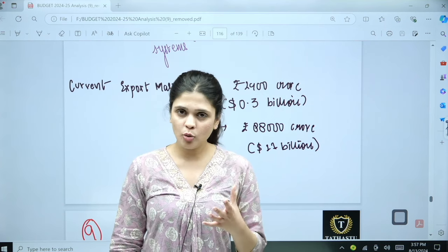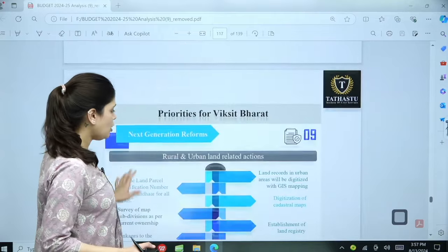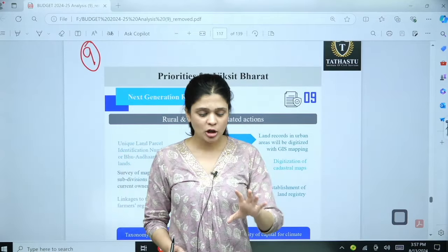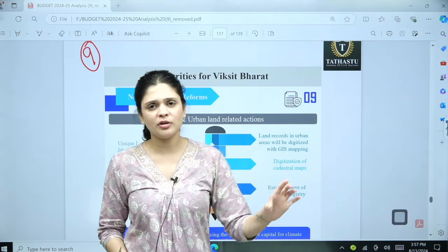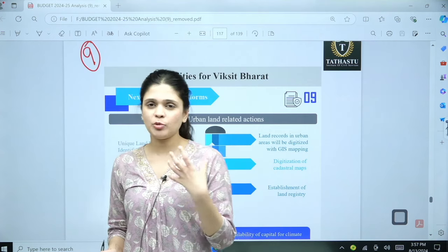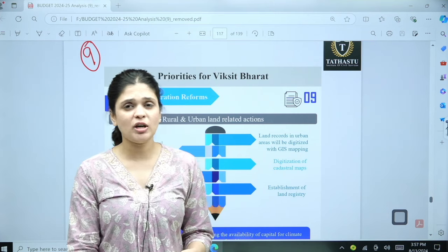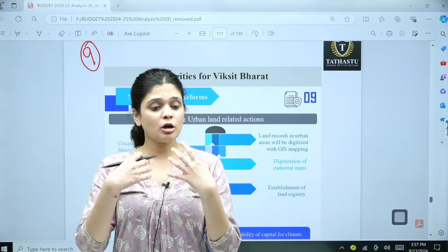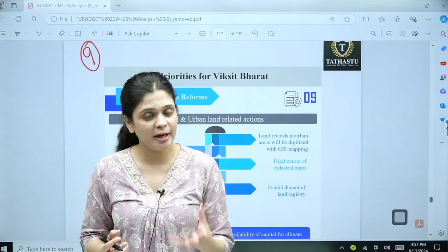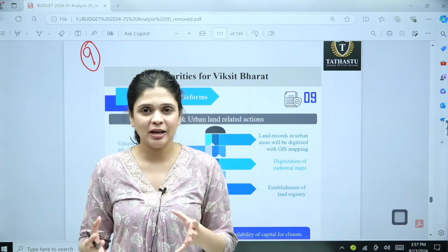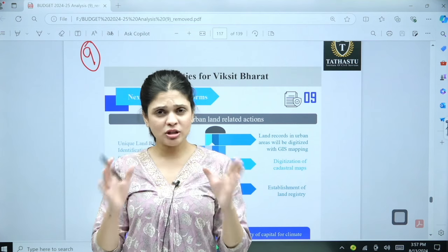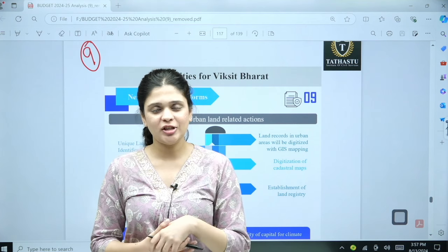Thank you so much everyone. Our ninth priority is basically on next generation reforms, which are different from the traditional reforms that we have been following. We will be completing this tomorrow. Our nine priorities will be completed. Then we have budget estimation, how much the government is trying to estimate their budget in terms of receipts expenditures. I will also help you analyze the estimations, and then we have tax reforms. This is all and thank you so much and have a nice day.